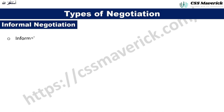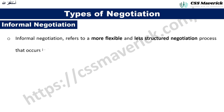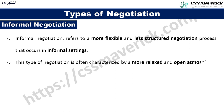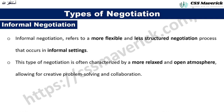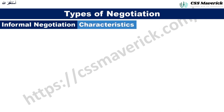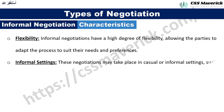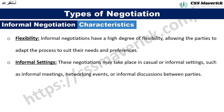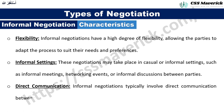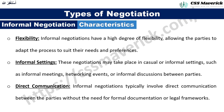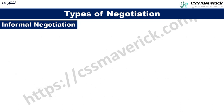Informal negotiation refers to a more flexible and less structured negotiation process occurring in informal settings, characterized by a relaxed and open atmosphere allowing for creative problem-solving and collaboration. Its characteristics include: flexibility — parties adapt the process to their needs in casual settings such as informal meetings or networking events; and direct communication — typically without the need for formal documentation or legal frameworks.